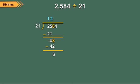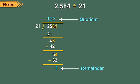Again, bring down the next digit, that is 4, to the right of the remainder 6. The number formed is 64. Now divide 64 by 21. The quotient is 3 and the remainder is 1. So we get quotient equal to 123 and remainder equal to 1.